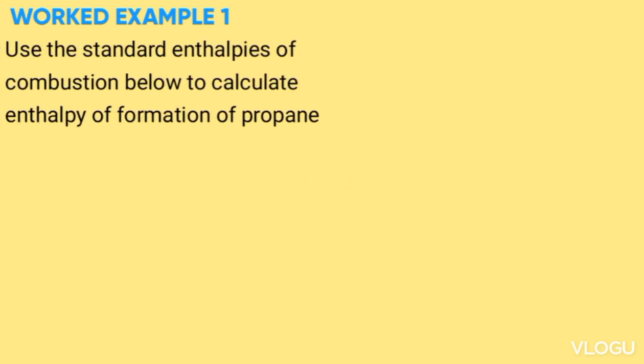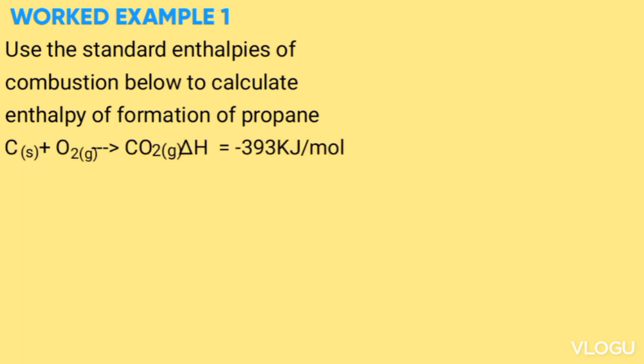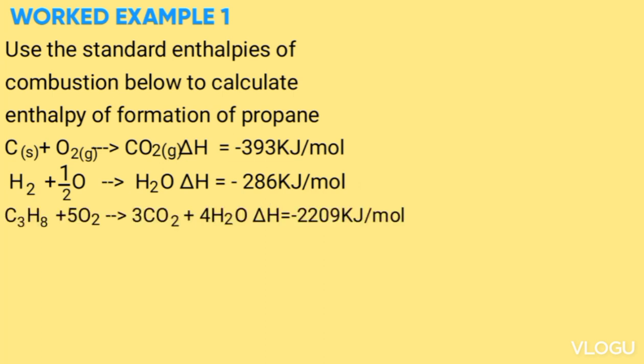Worked Example 1: Use the standard enthalpies of combustion below to calculate the enthalpy of formation of propane. Carbon + O₂ → CO₂, ΔH_combustion = −393 kJ/mol. Hydrogen + ½O₂ → H₂O, ΔH_combustion = −286 kJ/mol. C₃H₈ (propane) + 5O₂ → 3CO₂ + 4H₂O, ΔH_combustion = −2209 kJ/mol.